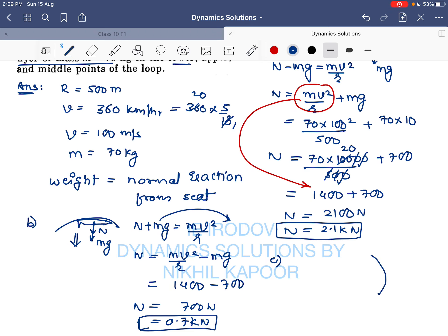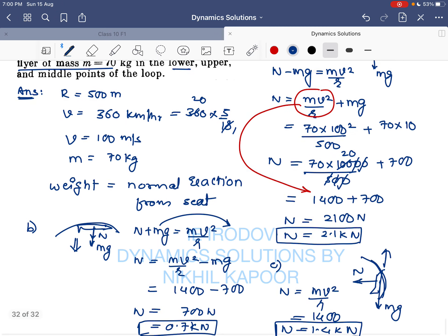Third, in the middle point when the flyer is looping the loop through the middle point along the curve path, in that case the weight is acting in the downward direction and the reaction is here. So whatever the reaction we are getting, that is nothing but the weight felt. N will alone provide necessary centripetal force which is mv² / r, which is nothing but 1400, so that would be 1.4 kilonewton.